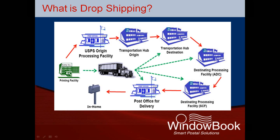As you can see by this flow chart, mail that is entered at a printing facility or printing plant — could be a letter shop or mailhouse — goes through a lot of steps, illustrated by the red arrows. From the mail preparer, it's transported to an origin post office, where it is sorted and then sent to a transportation hub. From there, it goes to a destinating processing facility, whether that's an area distribution center (ADC), a sectional center facility (SCF), or possibly both. From there it's sorted again and transported to the post office for delivery to the ultimate recipient at their mailbox.